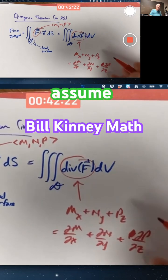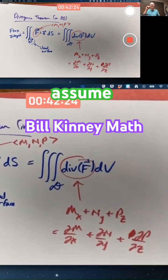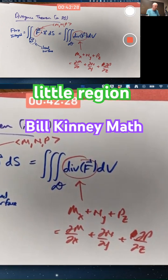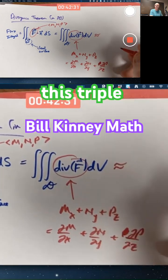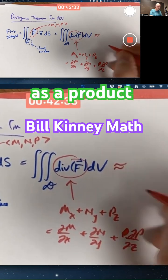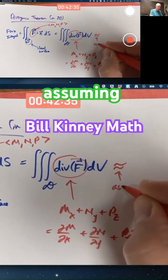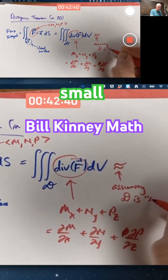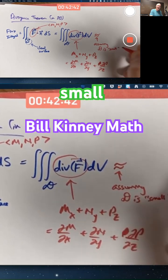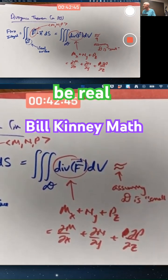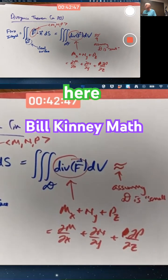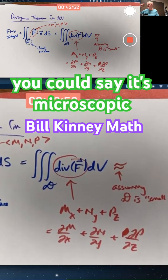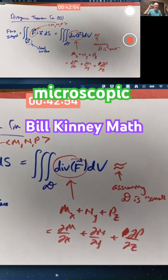If you assume this solid D is a tiny little region, you could approximate this triple integral as a product. Assuming D is small — how small is small? We don't ever be real specific here. Just imagine, if you want to get extreme, you could say it's microscopic. A microscopic volume.